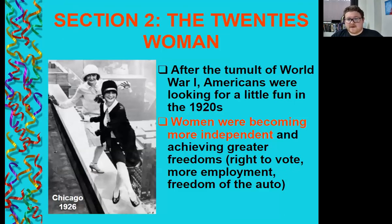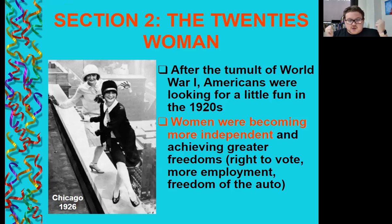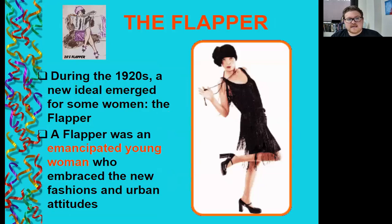Section two: the 1920s woman. After the tumult of World War I, Americans were looking for a little fun in the 1920s. The 1910s were bogged down in conflict and rationing, so people wanted to get a little crazy. Women were becoming more independent and achieving greater freedoms — they got the right to vote, more employment freedom, and the freedom of the automobile. During the 1920s, a new ideal woman emerged called the flapper — an emancipated young woman who embraced new fashions and the urban attitudes of the age.